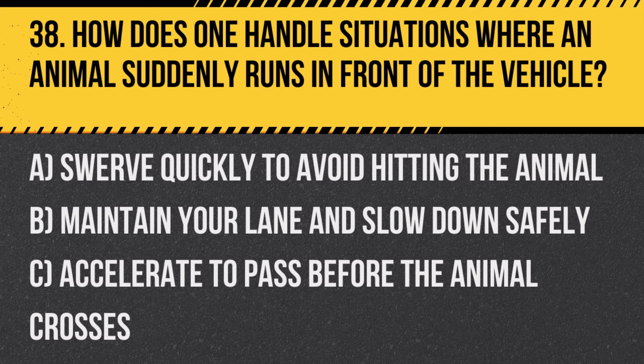Question 38: How does one handle situations where an animal suddenly runs in front of the vehicle? A. Swerve quickly to avoid hitting the animal. B. Maintain your lane and slow down safely. C. Accelerate to pass before the animal crosses. Answer: B. Maintain your lane and slow down safely. Swerving might cause a more dangerous situation or loss of vehicle control.